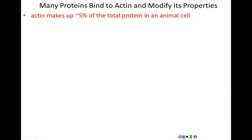Think of all the proteins we've talked about this semester: RNA polymerase, DNA polymerase, TATA binding protein, capping enzymes, all the receptors in the cell membrane, all the other proteins of the cytoskeleton. With all of those thousands and thousands of different proteins, 5% by weight — 5% of the total protein composition of an animal cell — is just actin.